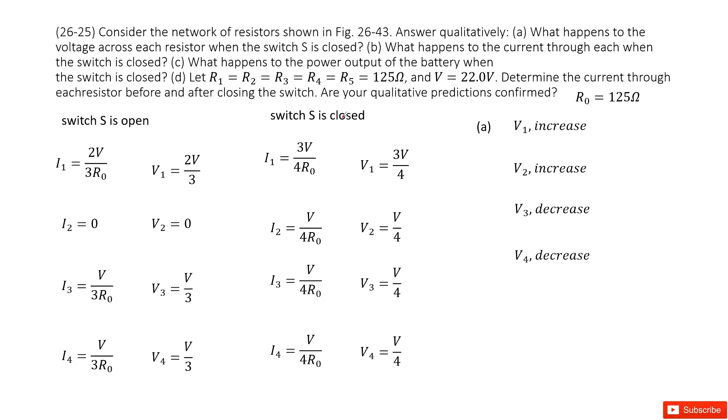Look at question A. What happens to the voltage across each resistor when switch is closed? Initially it's open, finally it's closed. We can see V1 changes from 2V over 3 to 3V over 4, so V1 increased. V2 goes from 0 to V over 4, increased. V3 from V over 3 to V over 4, decreased. And V4 from V over 3 to V over 4, decreased.